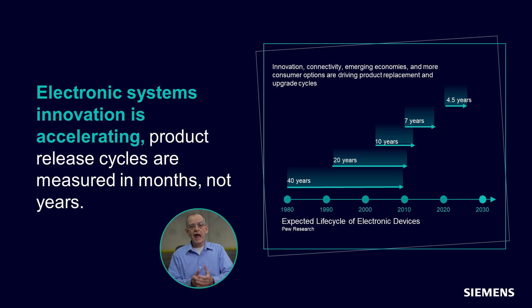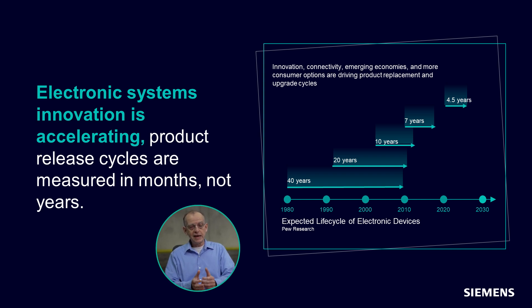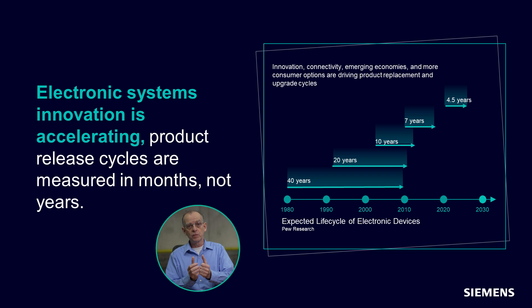This is combined with an ever-shortening product life cycle. Looking back over history, products had a much longer life cycle — it could take years to develop a product and then those products would be in the market for several years. As the pace of technology evolution increases, we see this life cycle shorten to meet the market window. So we need tools that can help with the collaboration of teams to work together smarter and shorten that time to market.